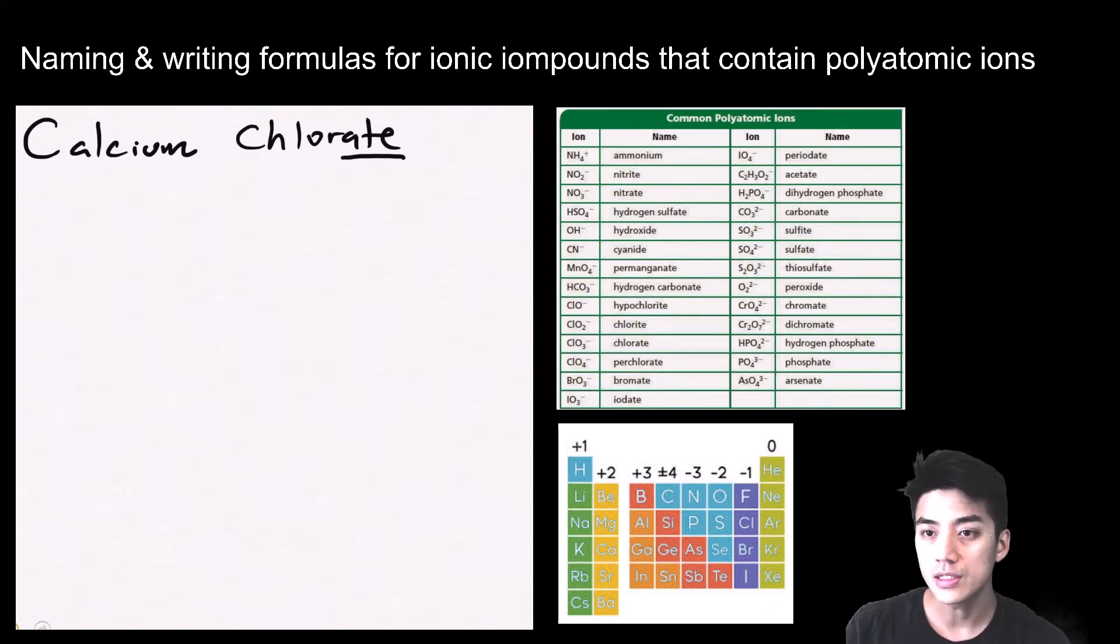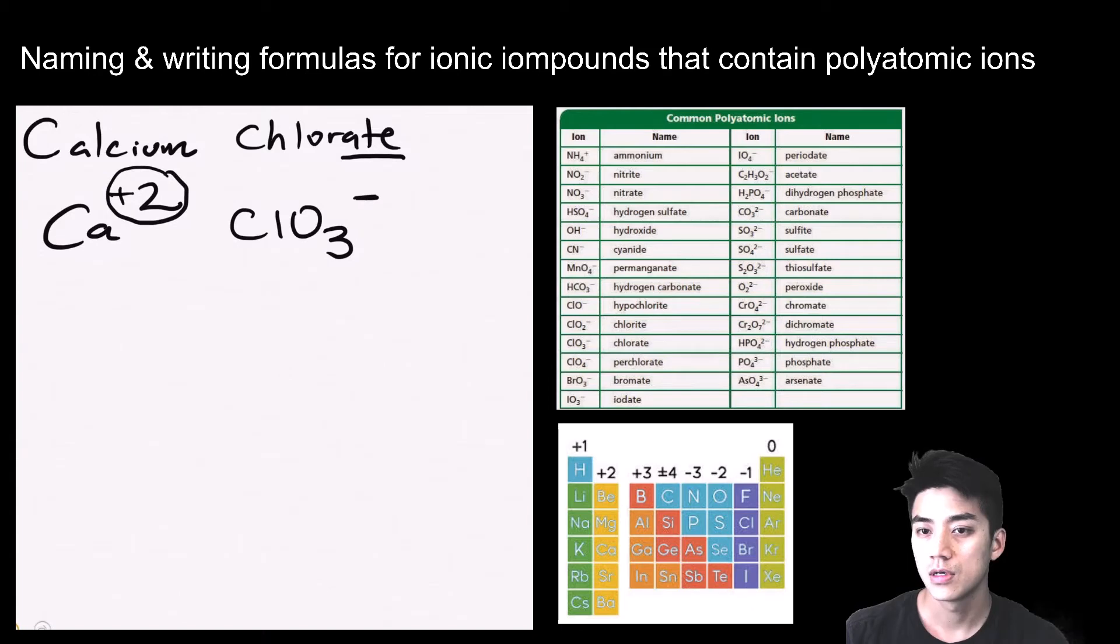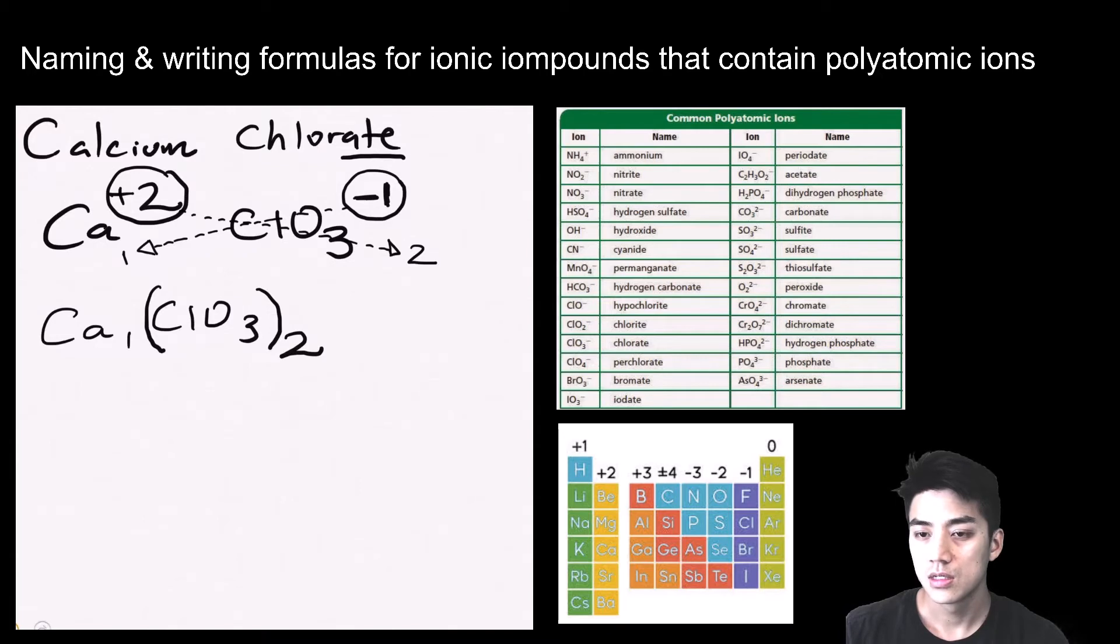This one is calcium chlorate. Calcium is a plus 2 charge. Chlorate is ClO3 with a negative 1 charge. Remember, if it's just a dash, assume that a 1 is there. Cross the 2 over, cross the 1 over. Write down what you see: Ca1(ClO3)2.